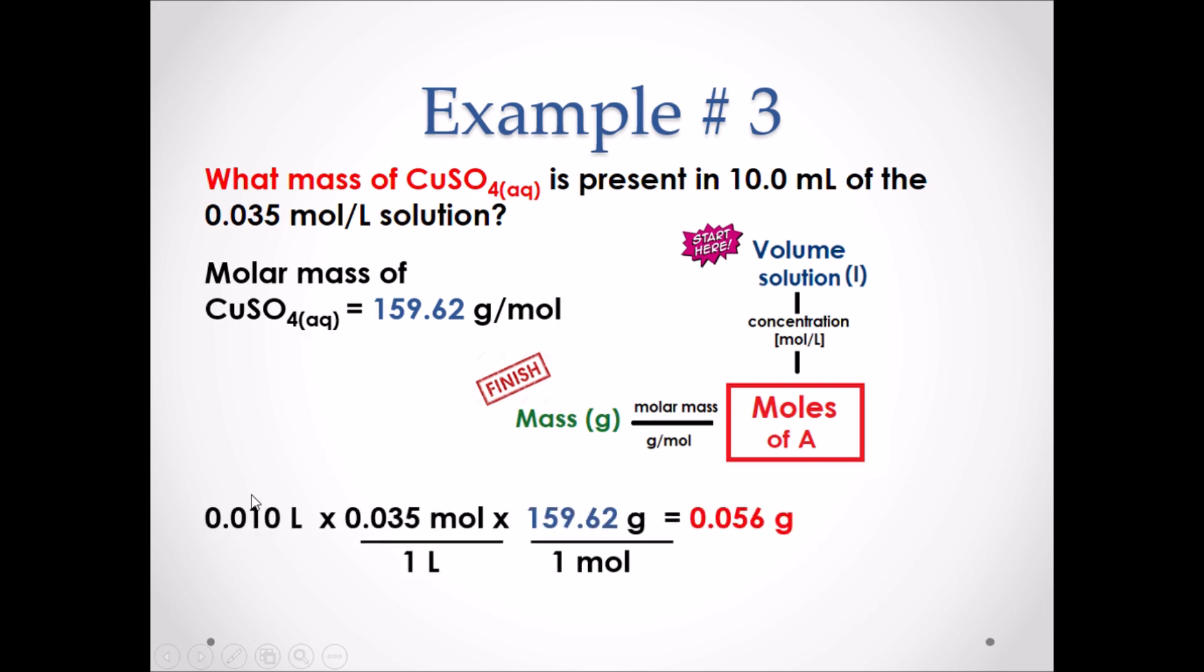We can then start with the volume of the solution in liters and times it by the moles per liter of the solution. This will then put us into moles of copper sulfate. We can then times that value by the molar mass of copper sulfate to get our final answer into grams. As a result, our answer is 0.056 grams of copper sulfate is required to make a 10 milliliter solution with a concentration of 0.035 moles per liter.